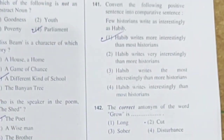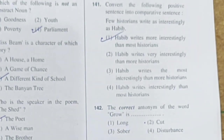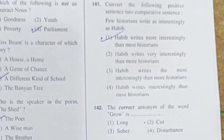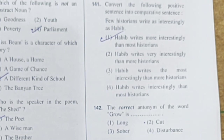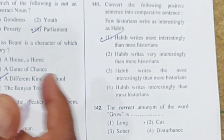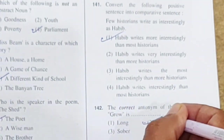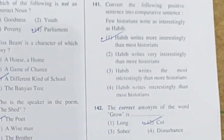Question 142: The correct antonym of the word 'grow' is? Grow means to increase/expand. Options: long, cut, sober, disturbance. The correct antonym of 'grow' is 'cut.' Option 2 is correct.